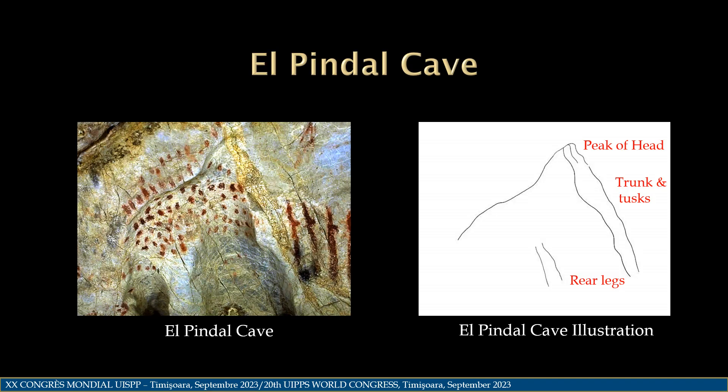We can break the principal panel into some of its elements and find features that have the appearance of a straight-tusked elephant with lowered tusks and trunk. Note how the artist found the tusk in the natural gold irregularity.